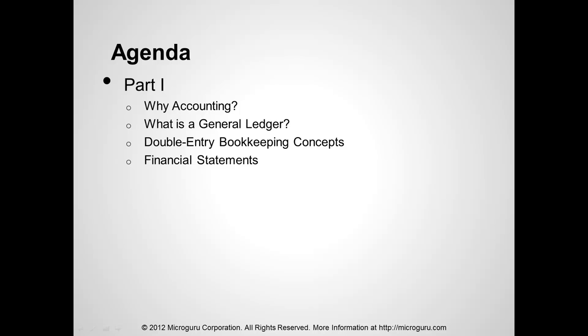This presentation comprises two parts. In the first part, we go behind the motivation for having accounting in the first place. Then we define what a general ledger is, followed by a look at some of the basic concepts in double-entry bookkeeping. And finally, in the first part, we look at common financial statements.